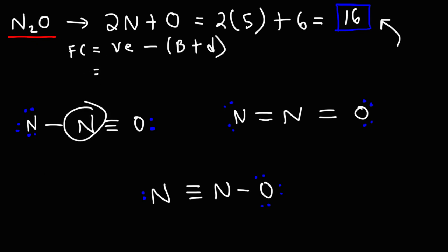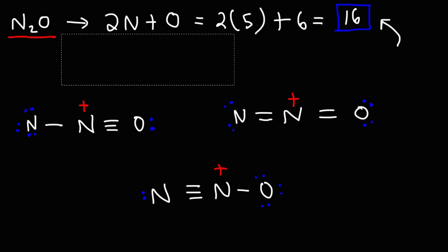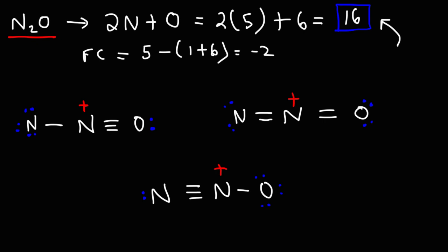Focusing on the central nitrogen atom in the first structure: it has five valence electrons, four bonds, and no lone-pair dots, so five minus four equals plus one — a positive formal charge. The same is true for the other central nitrogen atoms in the structures with four bonds. Now for the terminal nitrogen with one bond: it has five valence electrons, one bond, and three lone pairs which is six dots, so five minus seven equals negative two.